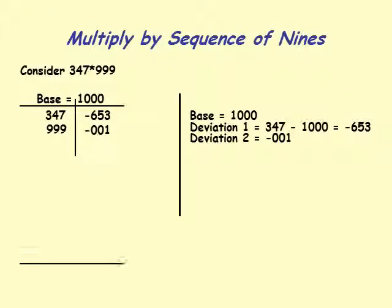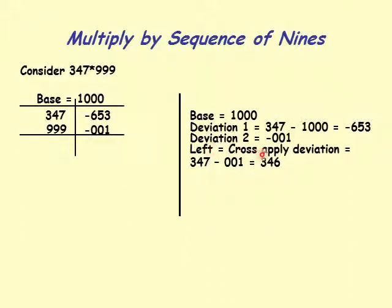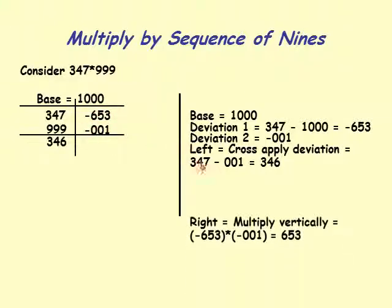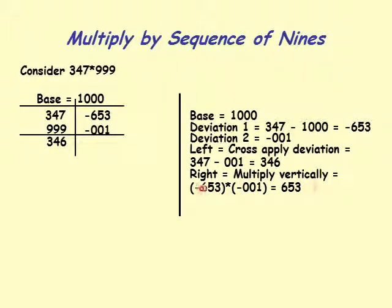Now we compute the left part using cross-applied deviation: 347 minus 001, which is 346. On the right, we multiply vertically: minus 653 times minus 001, which equals 653.